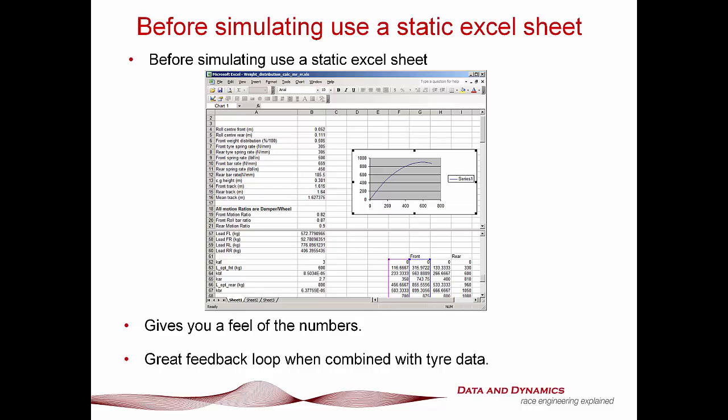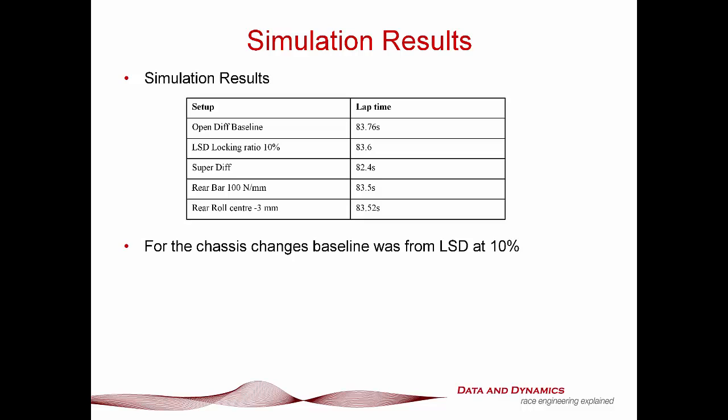What I did was take a typical front wheel drive car — based on the ChassisSim WRX MY98 template converted to front wheel drive — and ran some results at the Willowbank circuit in Queensland. I use Willowbank not for a summer holiday, but because it has a bit of everything: high speed and low speed corners. The open diff baseline was 83.76 seconds. Moving to an LSD at the front with a 10% locking ratio gave a gain of 0.16 seconds, dropping to 83.6 seconds. The super diff — which gives the perfect distribution of force between front and rear on the traction circle radius — was a really big gain, coming in at 82.4 seconds.